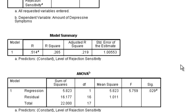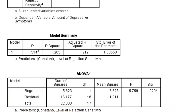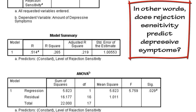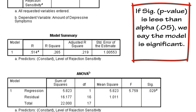We can next go to our model summary and our ANOVA table. The first thing we should probably look at is the ANOVA table, which lets us know if our model is significant. If the model isn't significant, nothing else matters. What it means for a model to be significant is whether the predictor variable — in this case rejection sensitivity — is a good predictor of the outcome variable, depressive symptoms. We determine that by looking at the significance value of our model. In this case, our significance value is .029, which is less than alpha .05. Therefore, the model is significant.